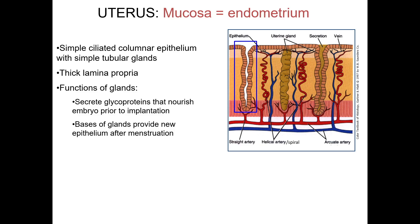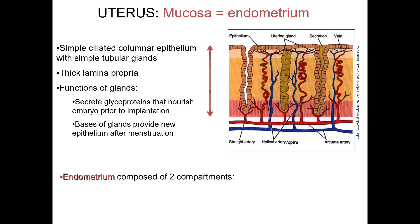The endometrium consists of simple ciliated columnar epithelium with ciliated and secretory cells resting on a highly cellular lamina propria that contains tubular mucus-secreting glands termed the uterine glands. The structure, thickness, and functional state of the endometrium all undergo marked changes during the ovarian cycle. The endometrium has two distinct layers. Marked in orange is the functionalis, or functional layer, that comprises around four-fifths of the endometrium. This is the layer that is shed and regenerated in the first half of the ovarian cycle. In the second half, the glands will change and secrete products that nourish the embryo.